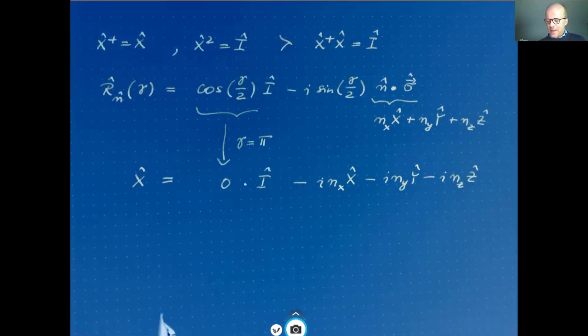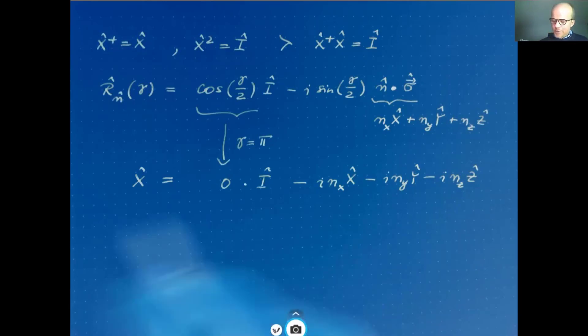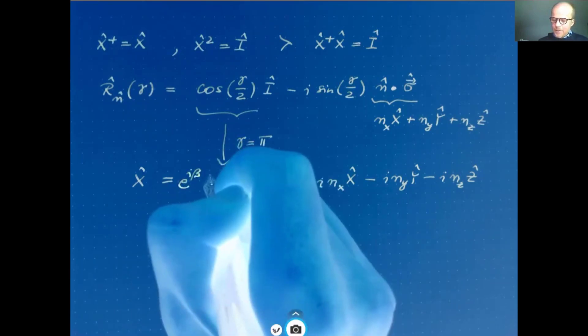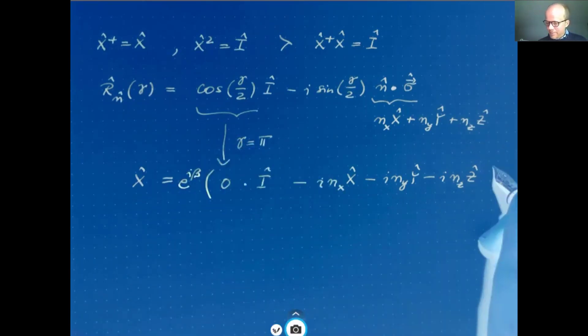I omitted one little aspect. I said every unitary operator can be written as a phase factor times such an operator r. And I forgot the phase factor. So I have e to the i beta times this form of the rotation operator r. And now we want to choose the components of the unit vector and also the phase factor such that we get Pauli x.